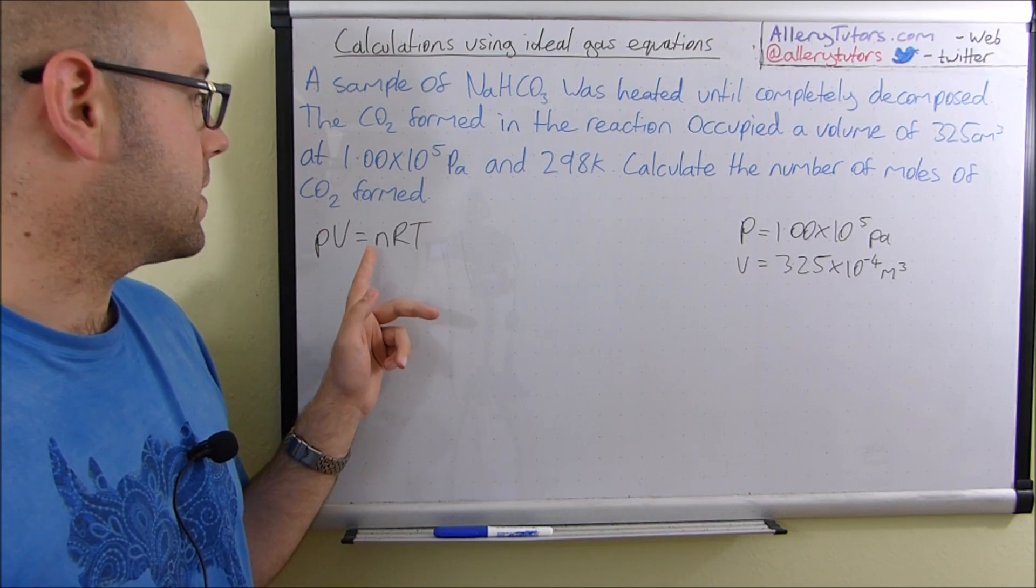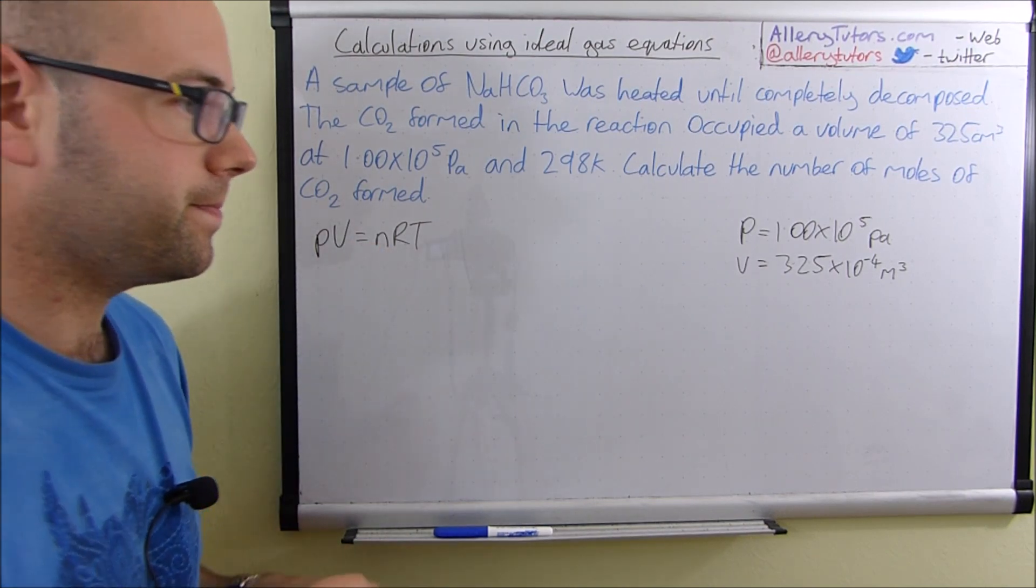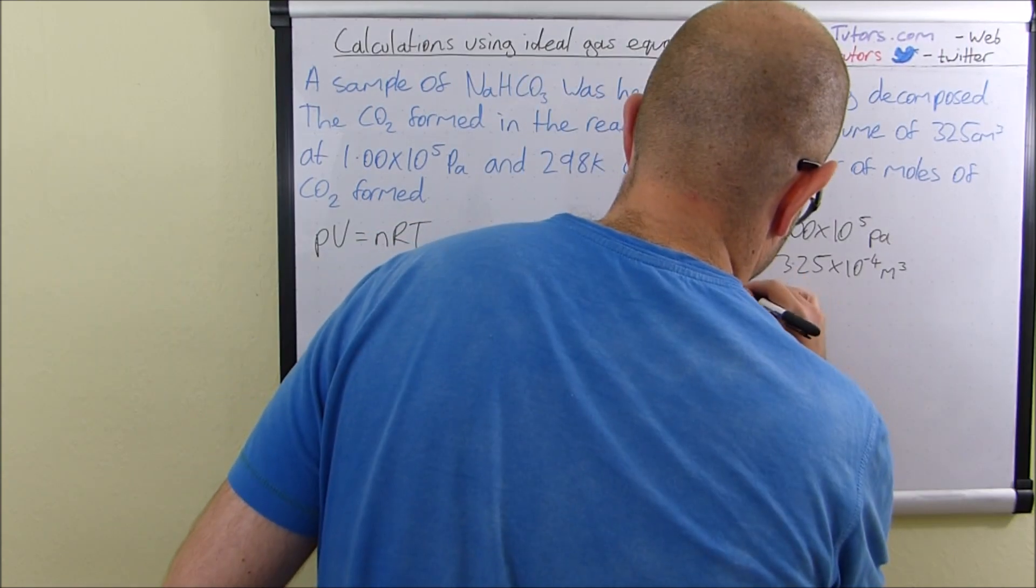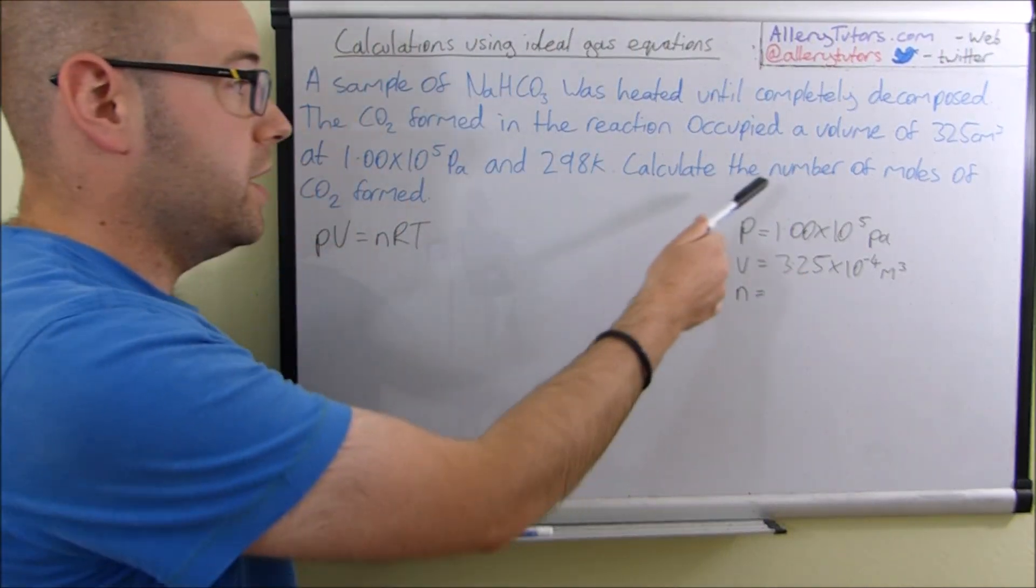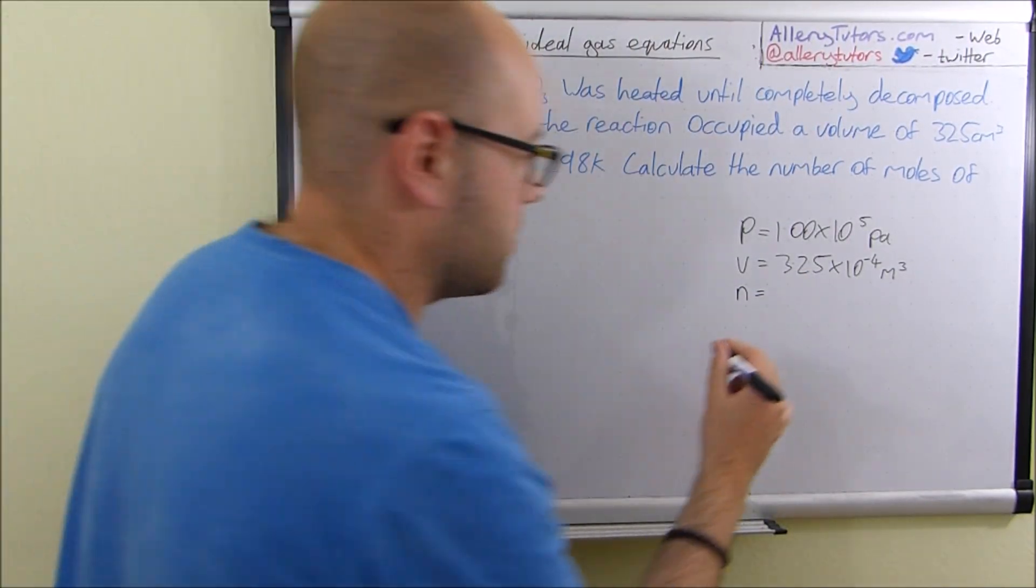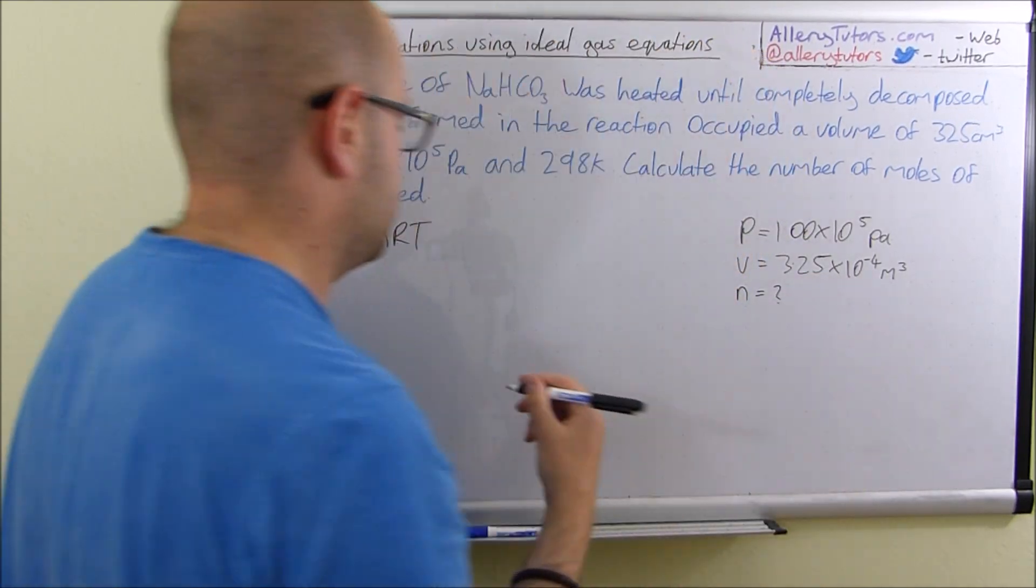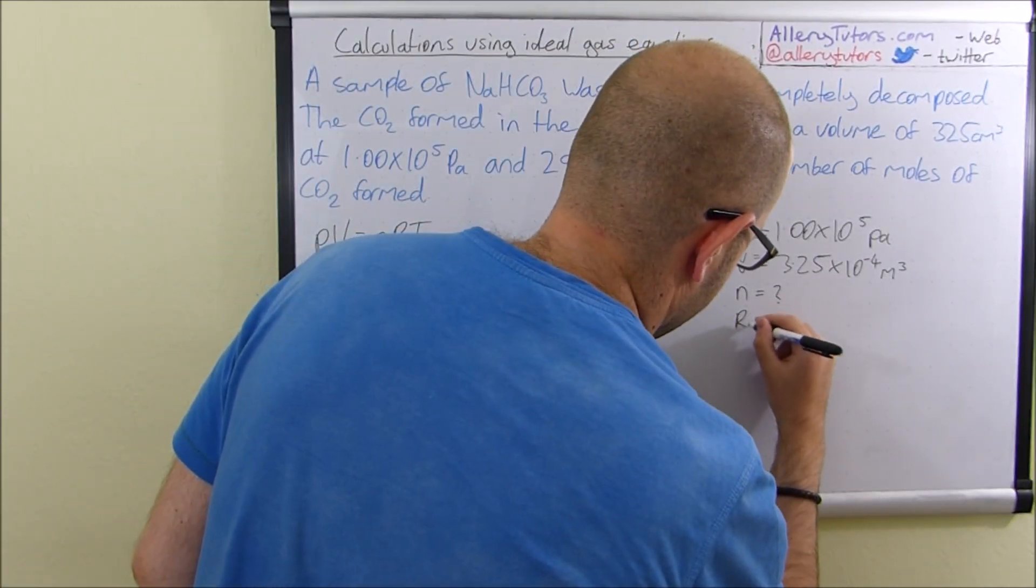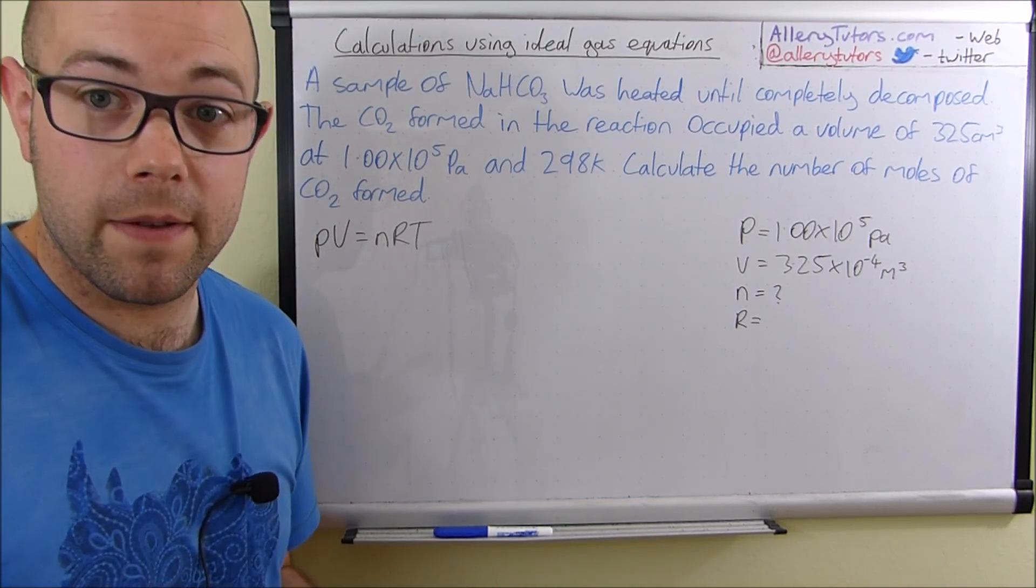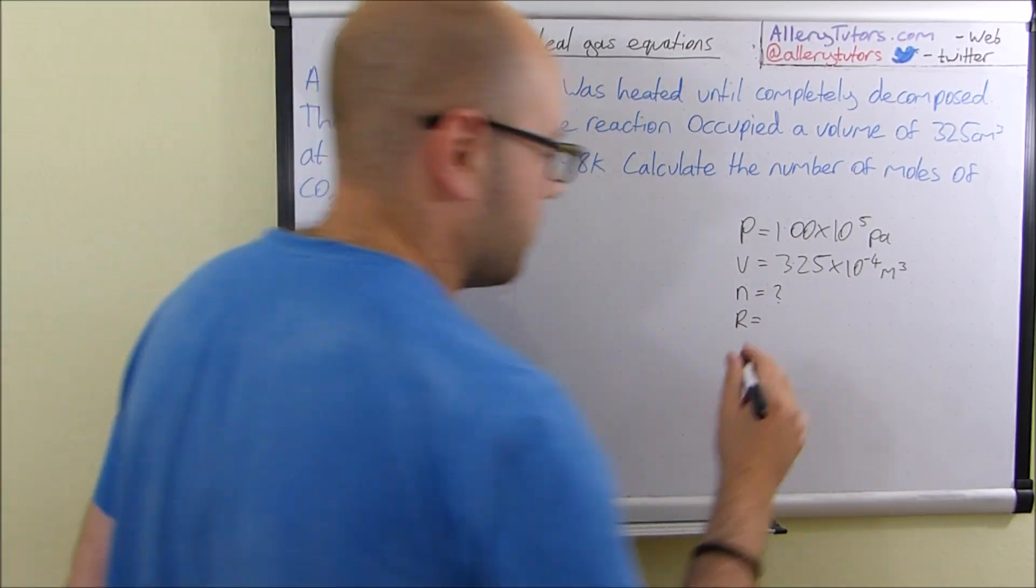The next bit is n, which is the number of moles. We need to work that bit out. So we're just going to put a question mark there. That makes it a bit easier. R is the ideal gas constant. You'll be given this number in the exam. It's 8.31.